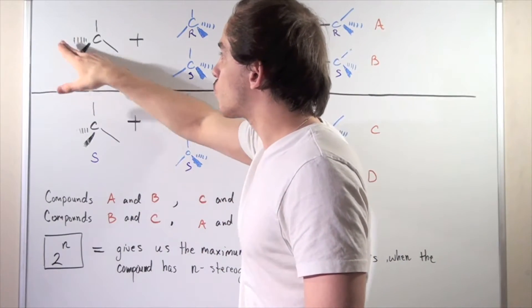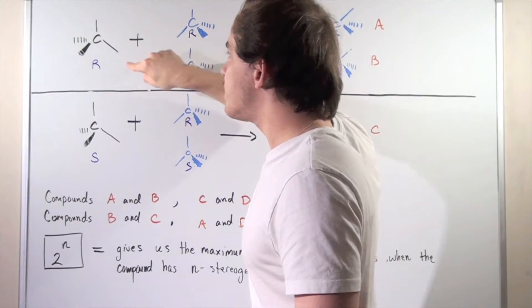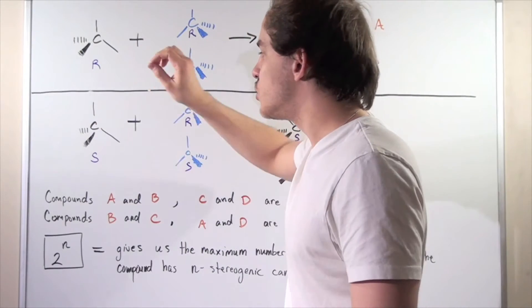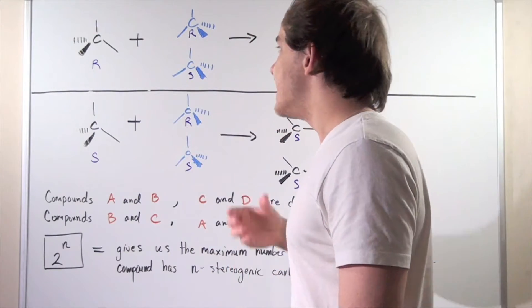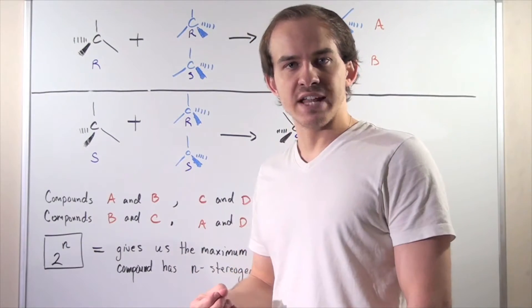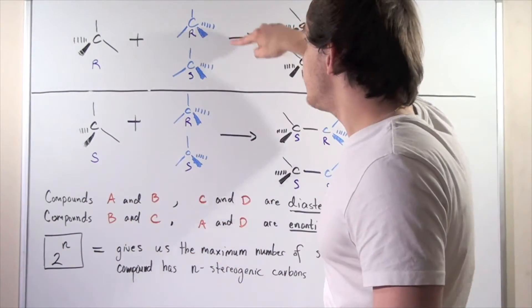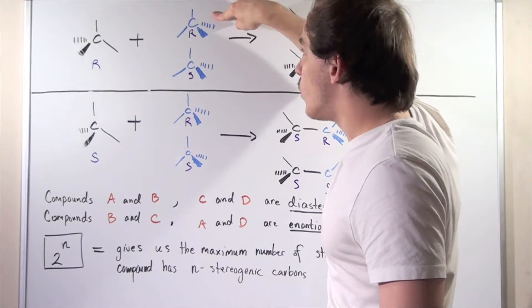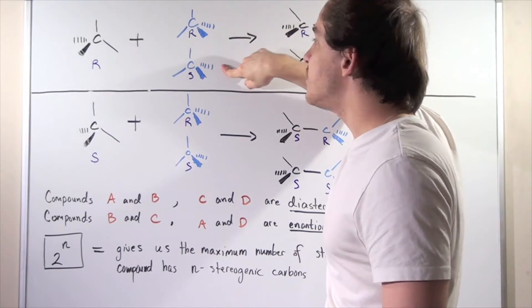Now I've omitted the actual groups but let's suppose we have four different groups attached to each enantiomer. Now let's suppose we also have a second pair of enantiomers, a different pair given here in blue. So we likewise have the R enantiomer and the S enantiomer.